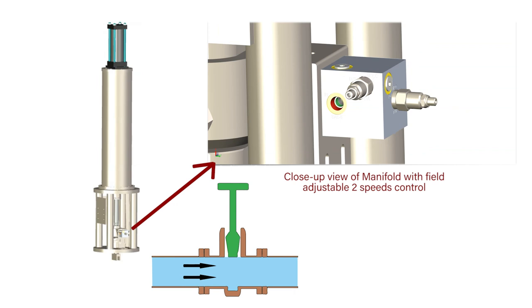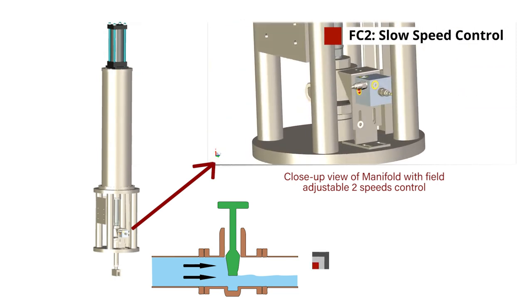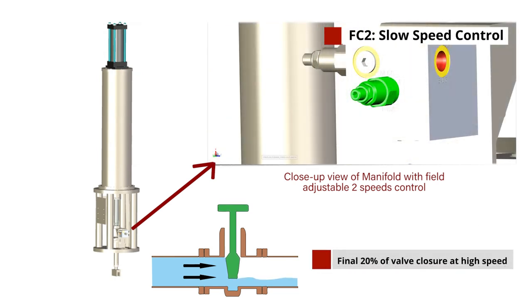During the initial sequence, the speed is regulated using FC1 high speed control. When the actuator reaches the target position, in our example 80% of the valve closure, the selector control valve will be triggered and the valve will flow through FC2 slow speed control.